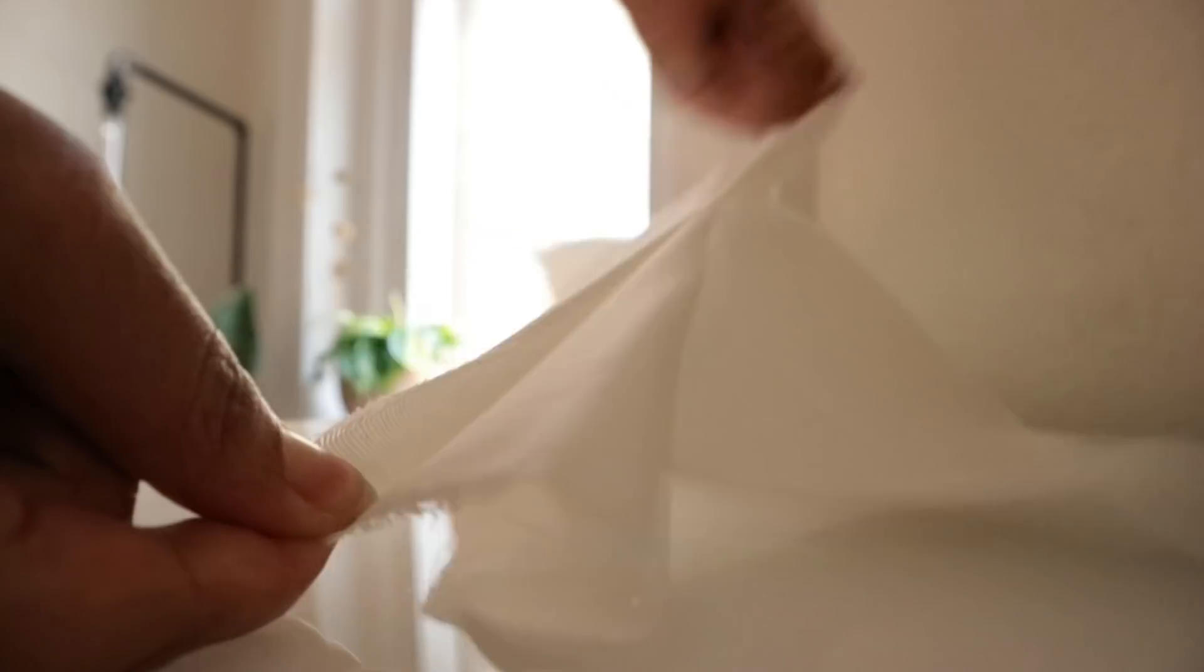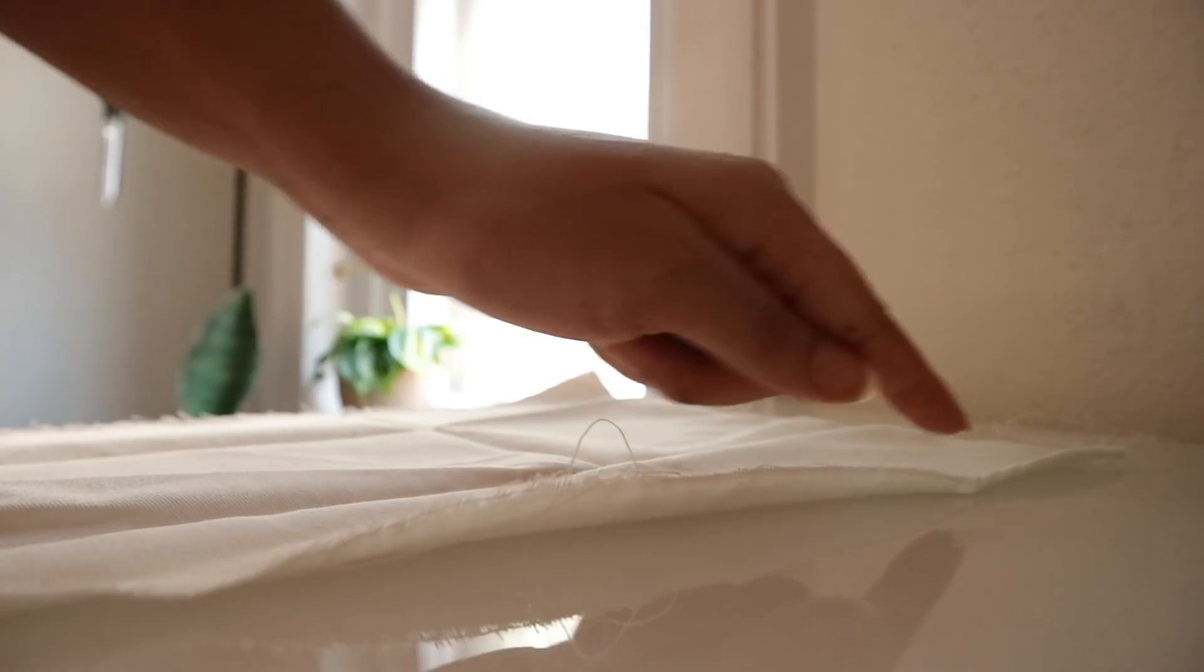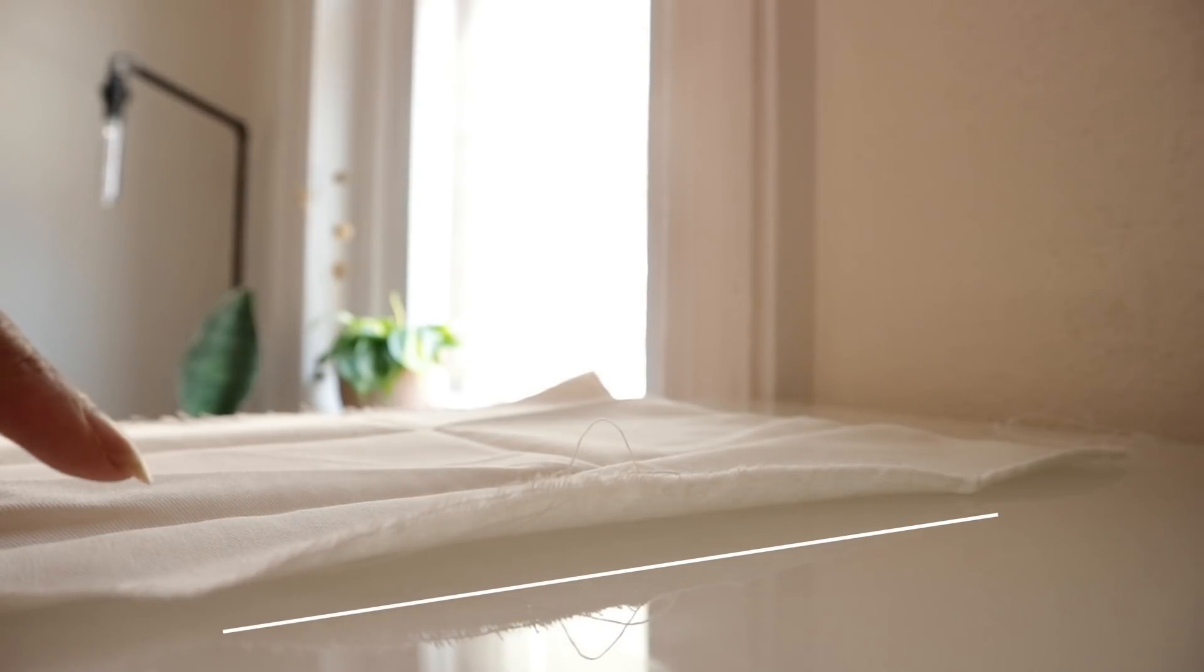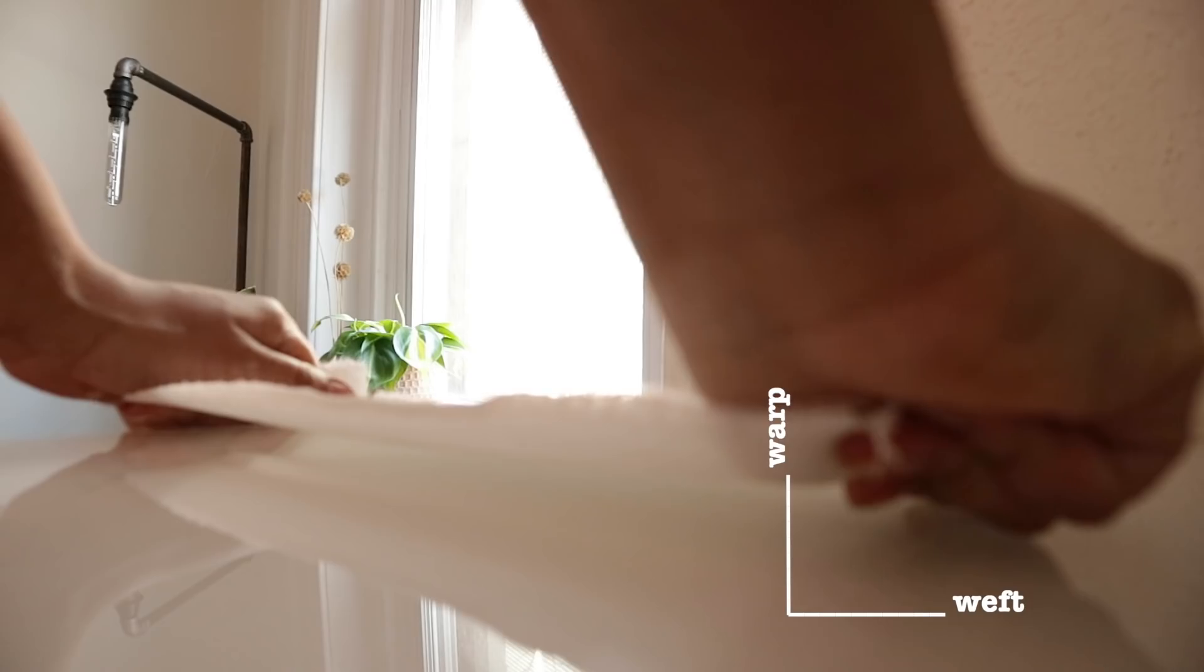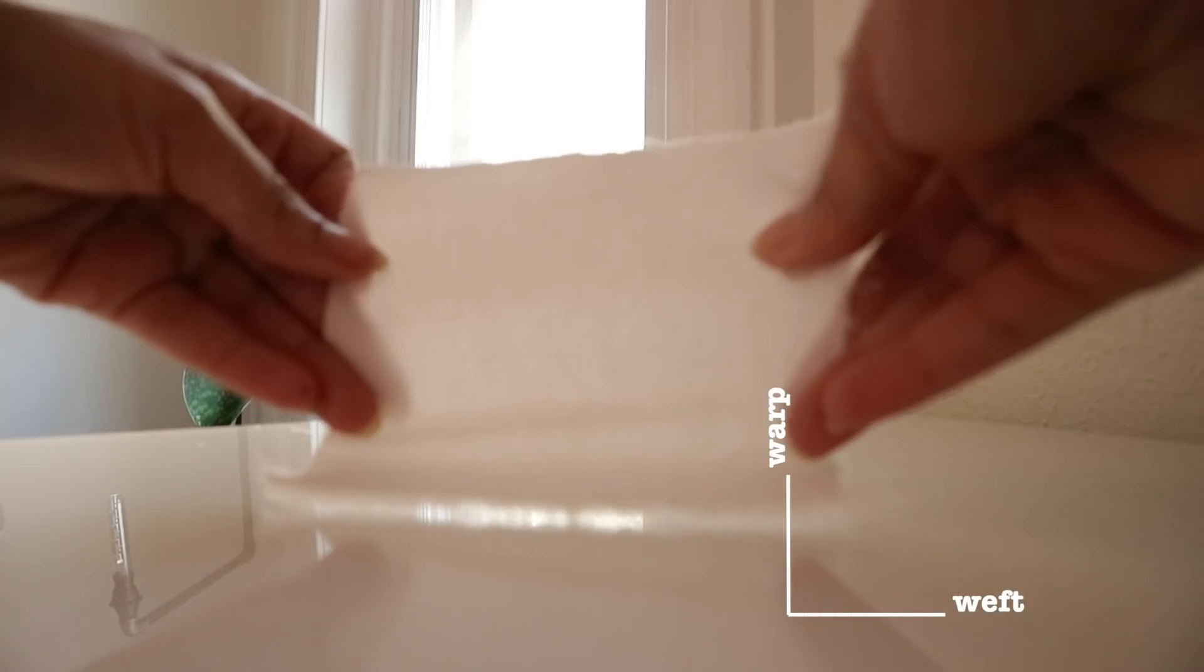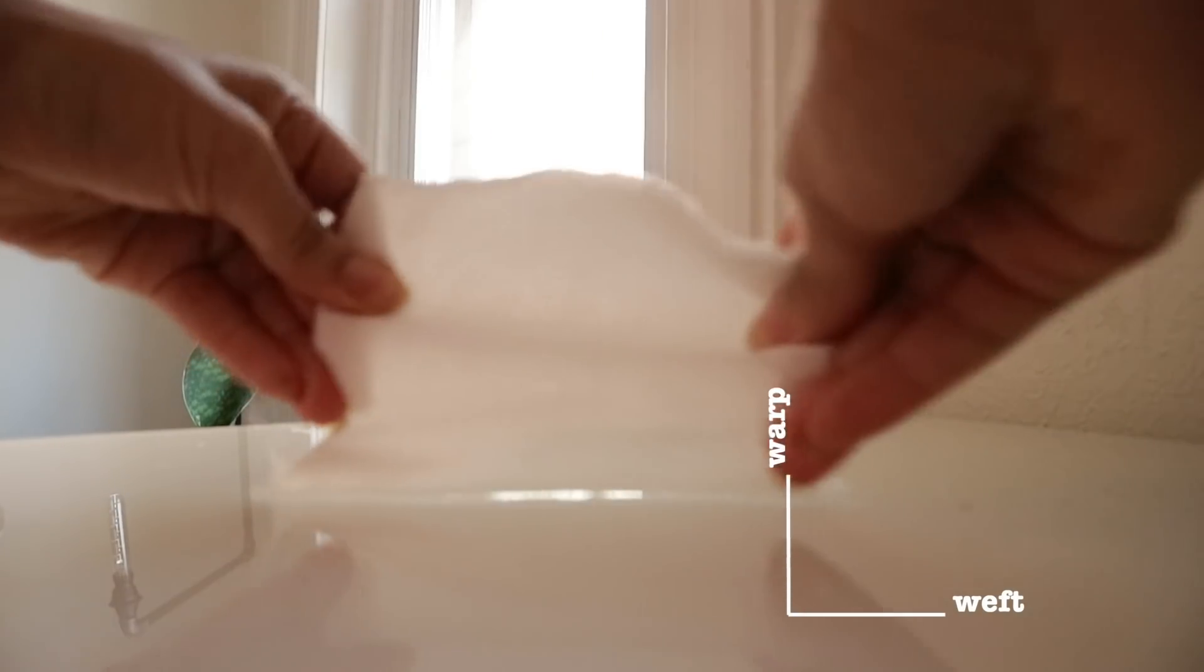Because we're using 100% cotton, I just snip it at the edge and I rip it because this is going to cut it on the grain. And like I said, fabric is a whole other video. But just know that your fabric is made up of a weft and a warp which run perpendicular to each other. Therefore this weave is pretty solid.